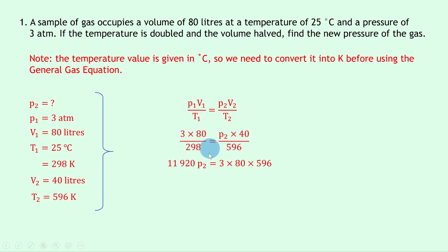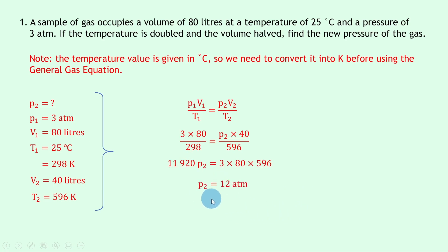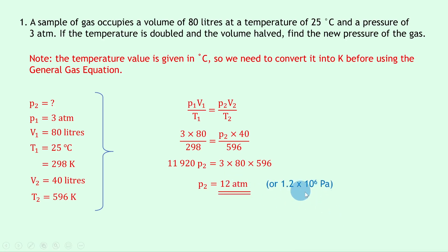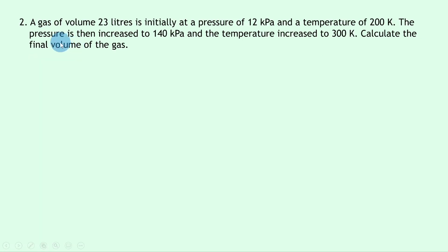The value 11920 was found from 298 × 40. Putting the right-hand side into the calculator and dividing by 11920 gives p2 on its own: p2 = 12 atmospheres. Another way of writing this is 1.2 × 10⁶ pascals, because one atmosphere is atmospheric pressure, which is 1 × 10⁵ pascals.